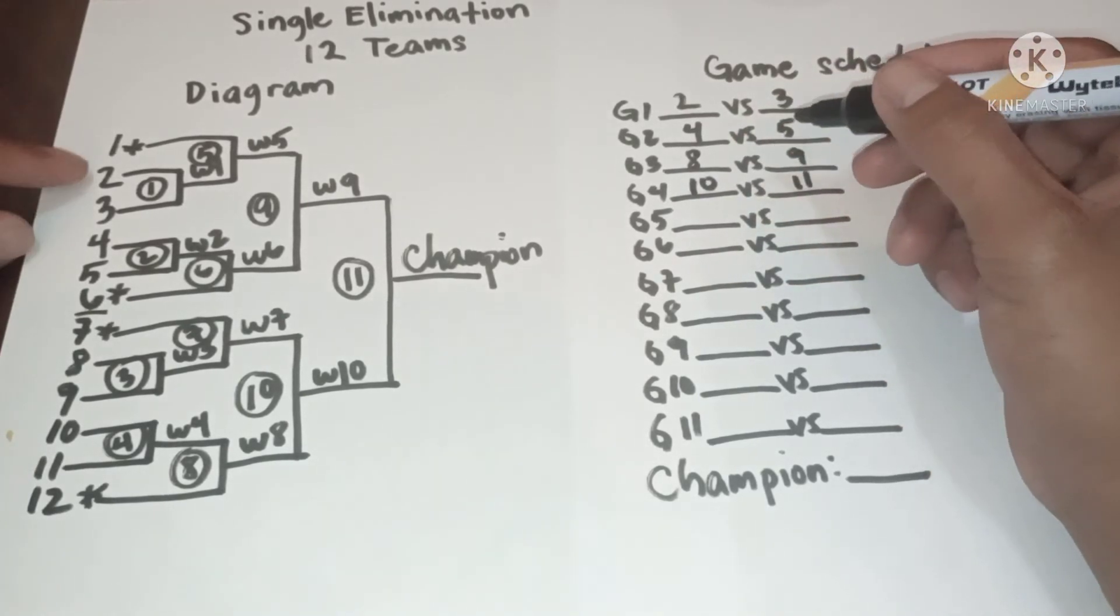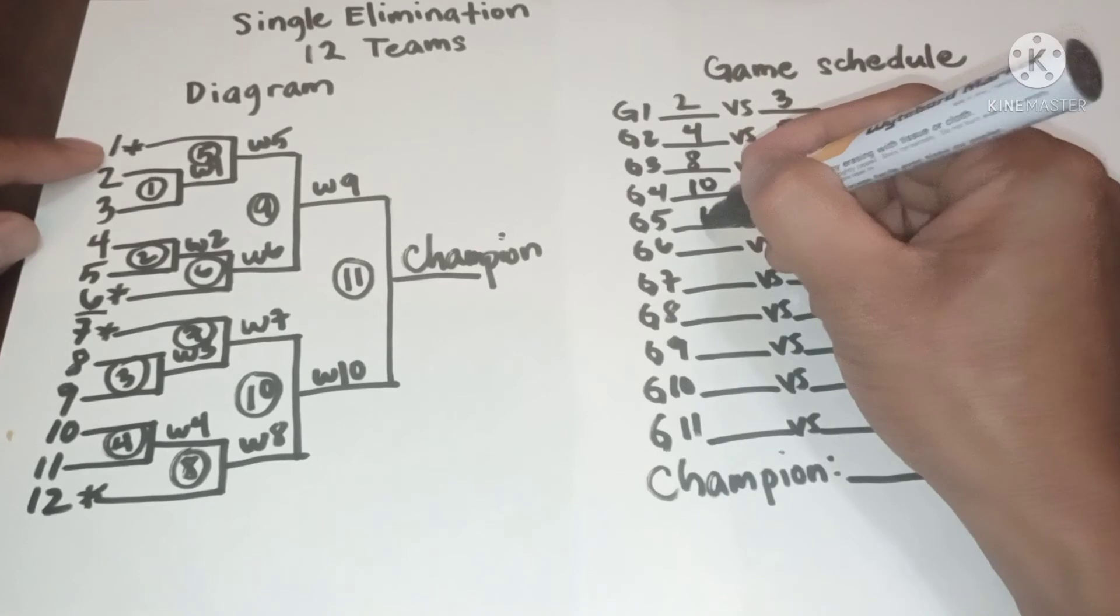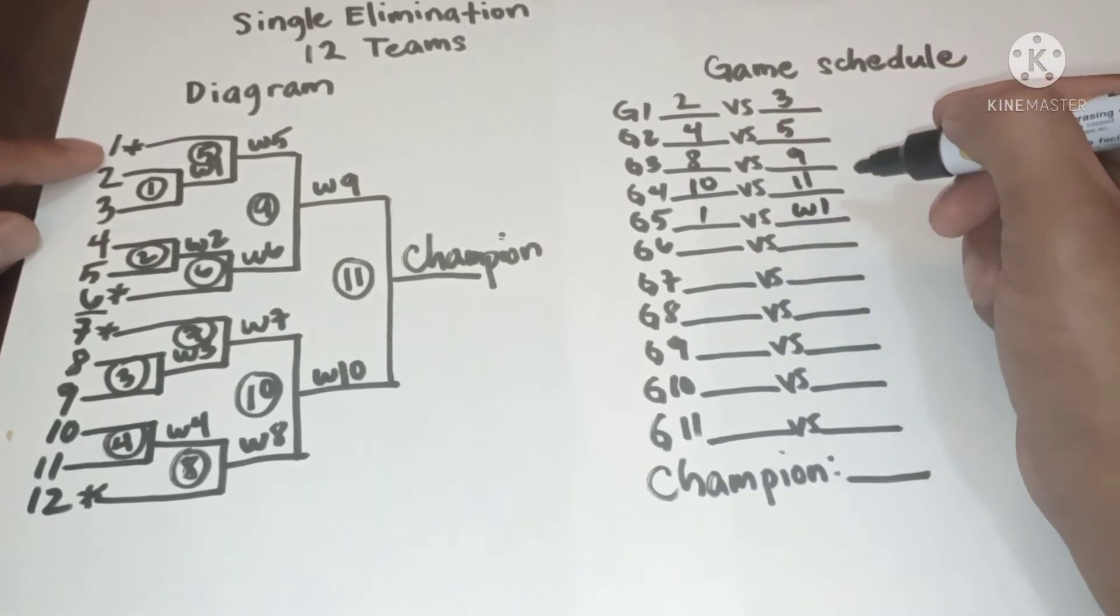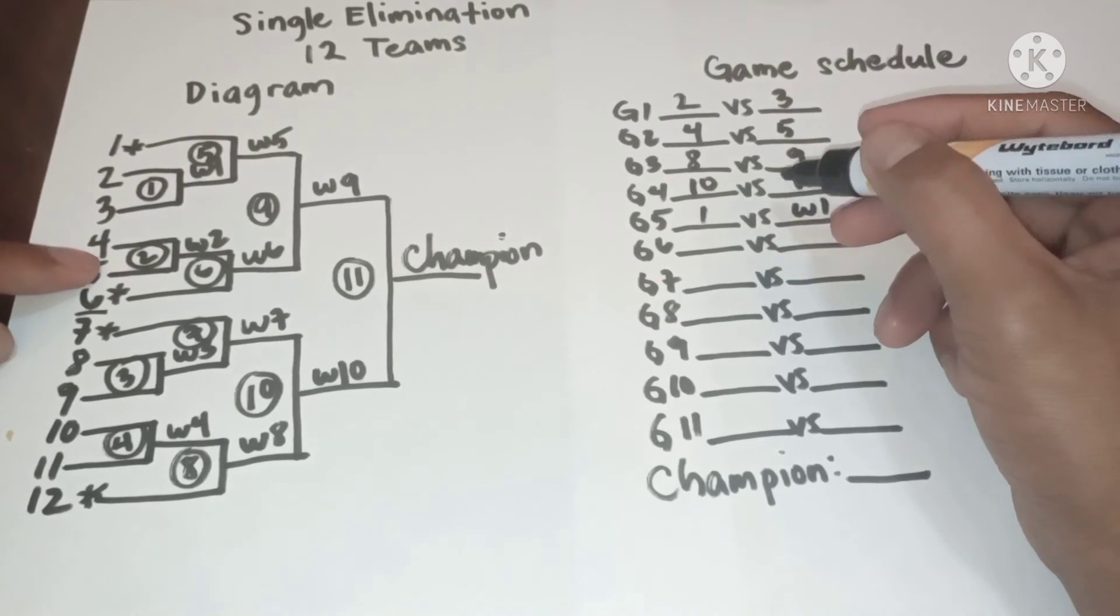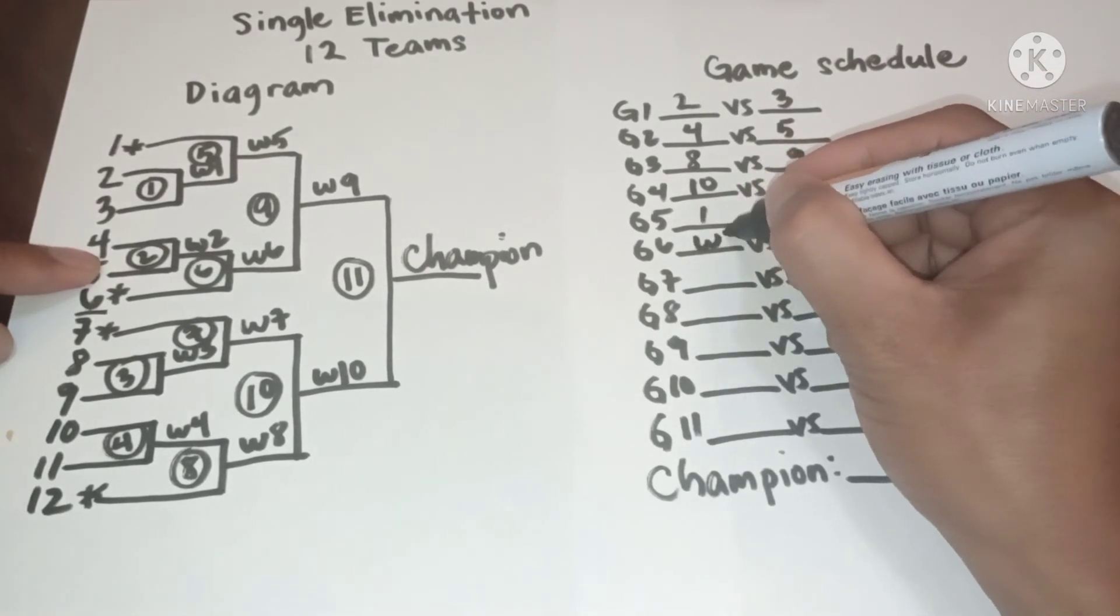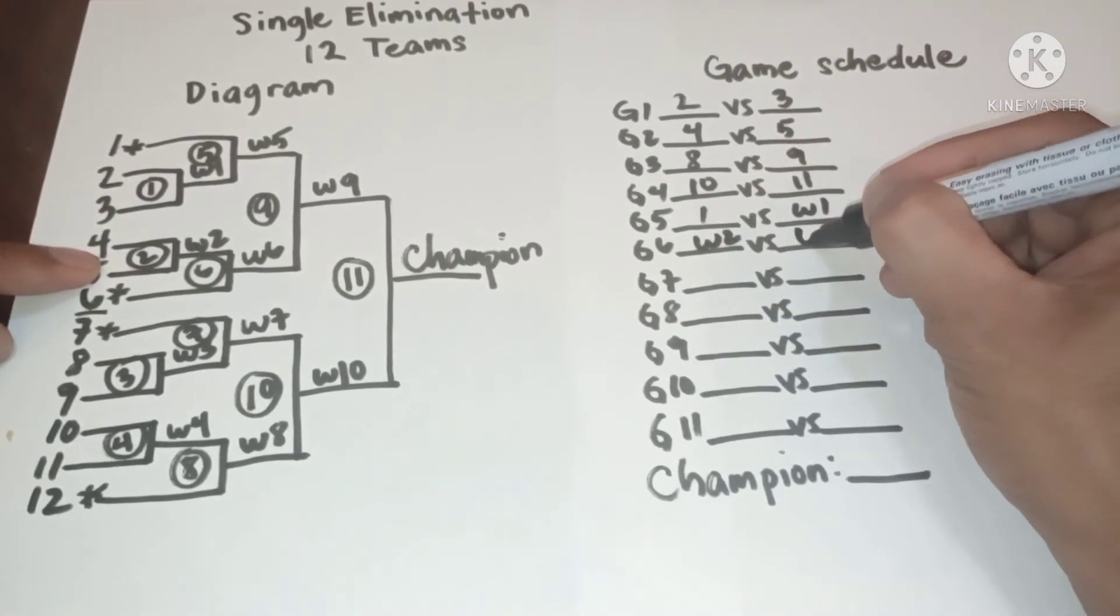In game 5, we have 1 versus winner 1. In game 6, we have winner 2 versus 6.